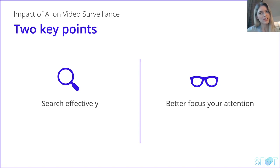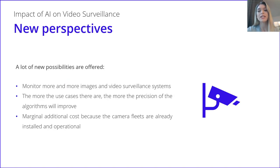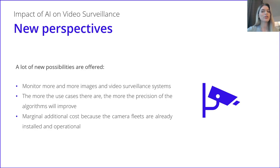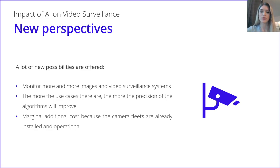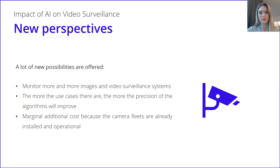If we now turn this to the surveillance point of view, let's see the key benefits that introduction of AI to surveillance can bring. AI surveillance indeed offers us new possibilities while working with video data — we can monitor more images and surveillance systems. Thanks to machine learning, the algorithms of AI will improve their precision based on previous cases, therefore continuously progressing the quality and accuracy of the results. The more different cases there are, the more precise the algorithms will be. Finally, additional expenses will not be significant because of the already operational camera fleets. The investment will have to be mainly done in the video surveillance management server.